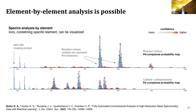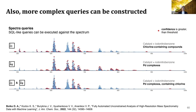And you can do various things — for example, you can take spectra and label all ions that contain palladium, and then you can aggregate it. You can do mass spectrometry monitoring and see how the number of palladium complexes changes over time. And you can perform more in-depth analysis — for example, search for all ions that contain both chlorine and palladium.